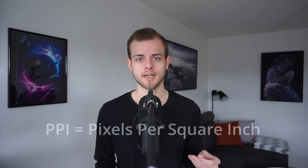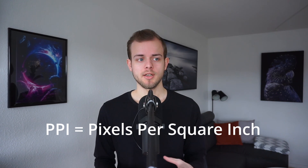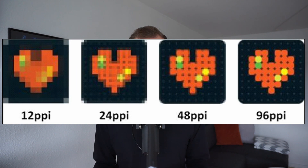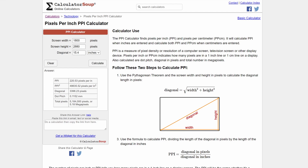Another important aspect is PPI. PPI stands for pixels per square inch — it's a number that shows how many pixels you have within a square inch of your monitor. The more pixels you have, the higher the number, and the more clear and detailed an image you're able to showcase. This means that the size of your monitor will also have an impact on the resolution you should use. You can use various calculators online to calculate PPI for you. Let's take a look at an example.